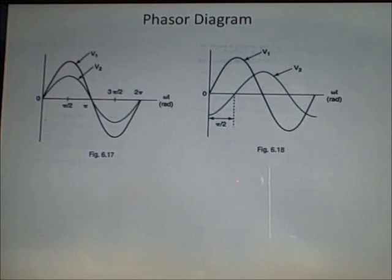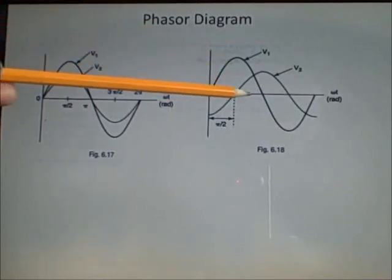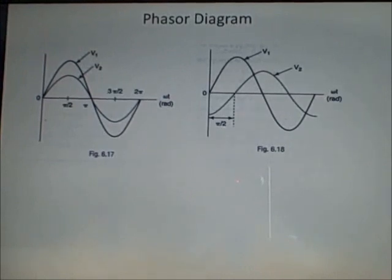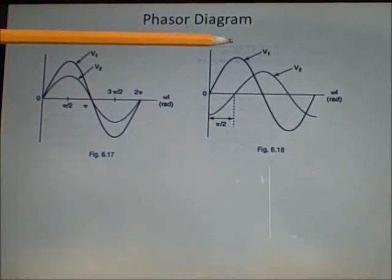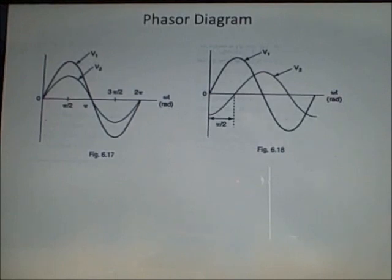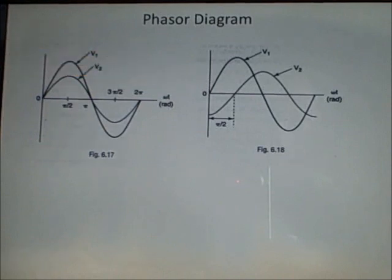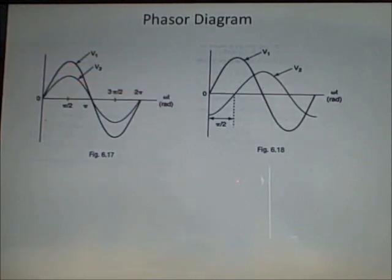Josh, describe v2 in relation to v1 on the right side of the diagram. You should have identified that v2 reaches its maximum or peak voltage pi divided by 2 after v1. Well, pi divided by 2 is how many degrees? In terms of the circle, it's 90 degrees. Now is your chance to make a note of the value of pi divided by 2: 90 degrees.